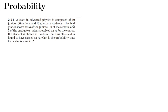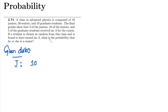A class in advanced physics is composed of 10 juniors, 30 seniors, and 10 graduate students. So the given data is: junior students are 10, senior students are 30, and graduate students are 10.